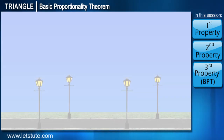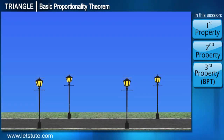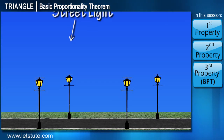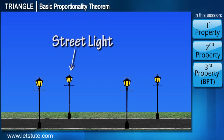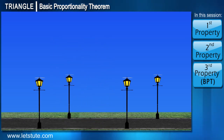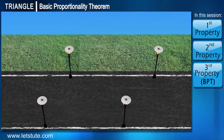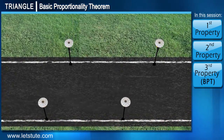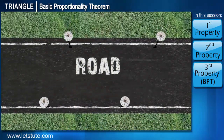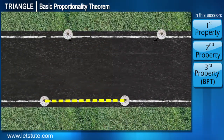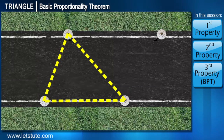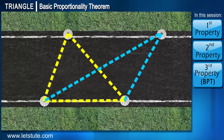Here you can see a road, and on both sides of the road there are street lights. Consider there are two poles on both sides of this road, and let's draw two triangles by joining these poles.